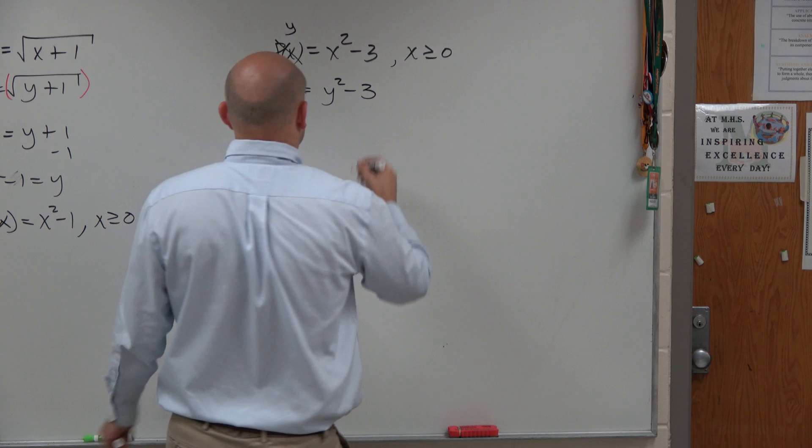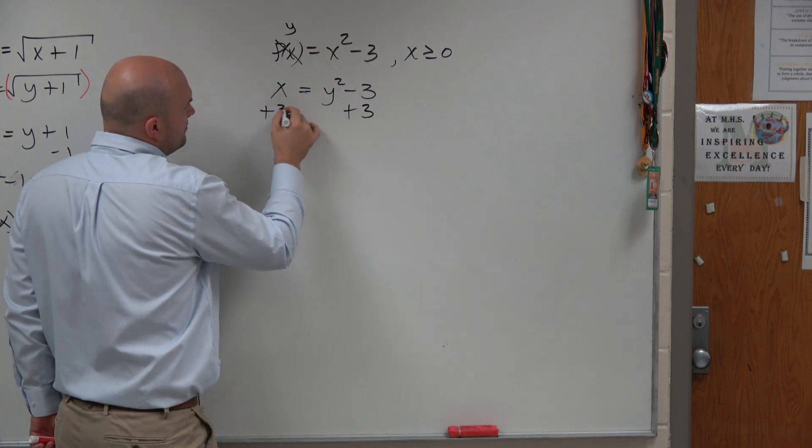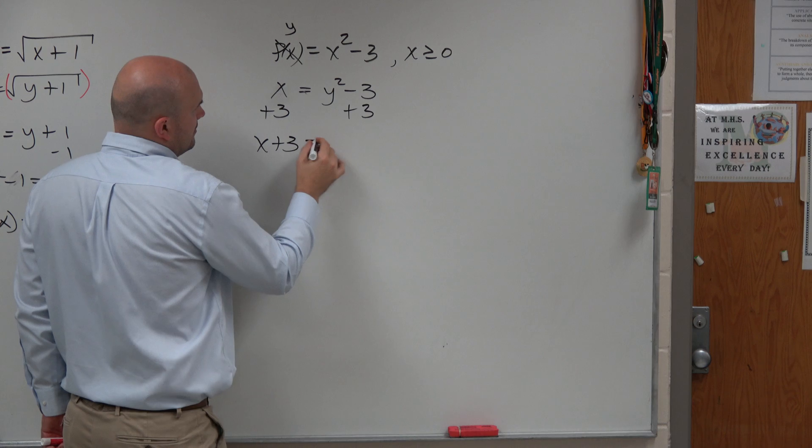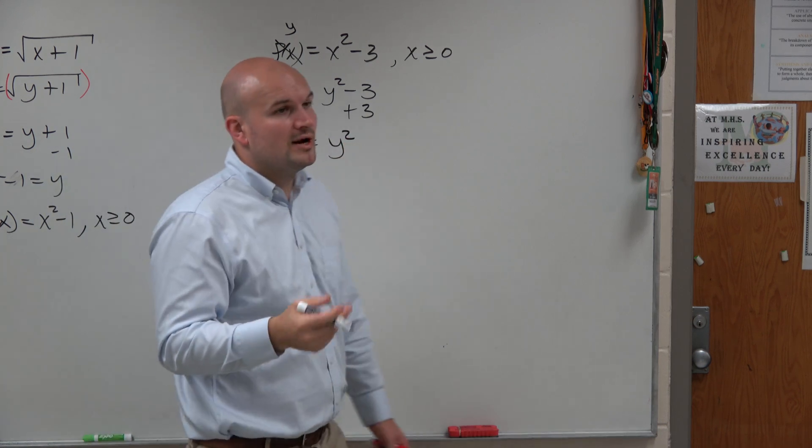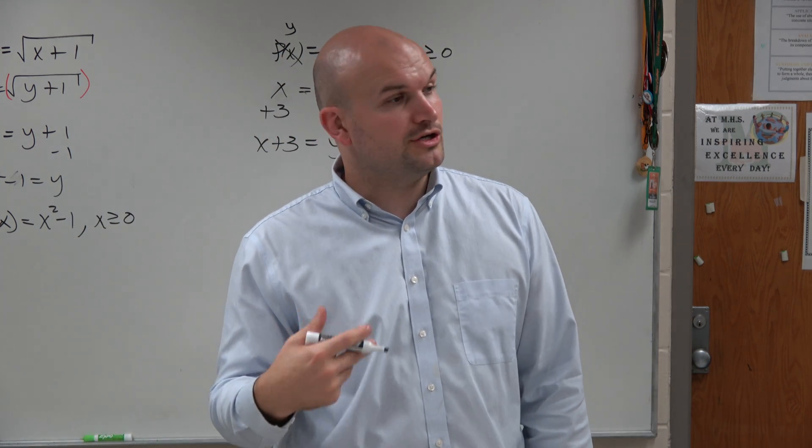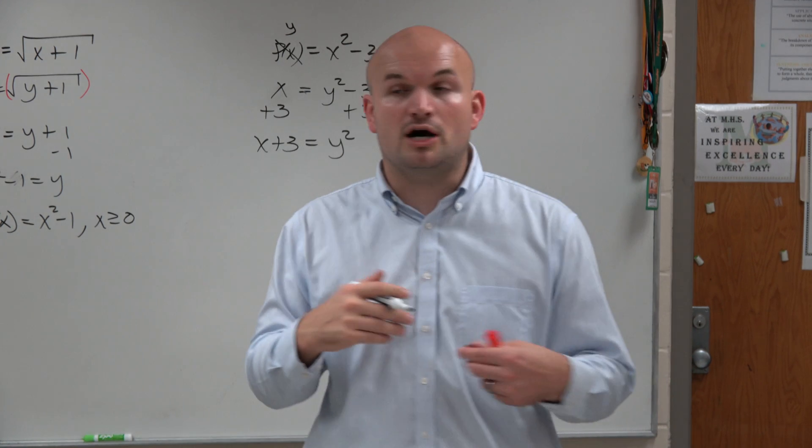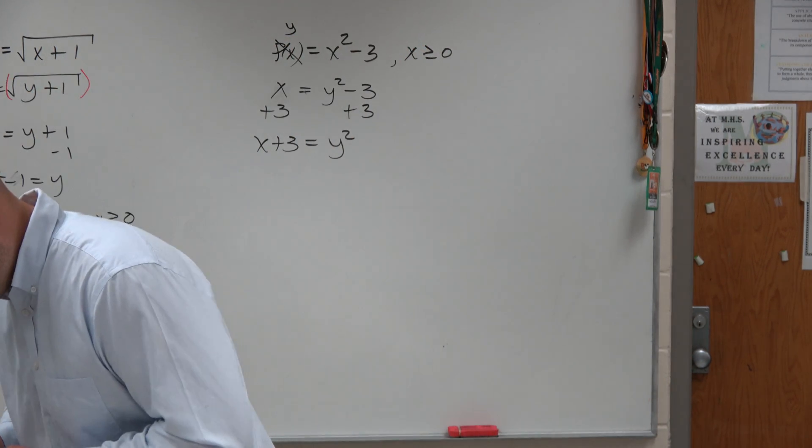Now, to solve for the x, when I wanted to undo squaring or undo the square root, I squared. So if I want to undo squaring, I need to take the square root.